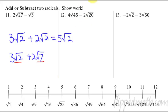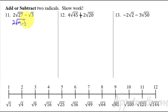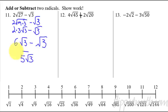Now let's simplify with addition and subtraction. With the first one, you can't subtract right away because the radicals are not the same, so let's simplify first. We get 2 radical 9 times 3 minus radical 3. Radical 9 simplifies to 3, so this is 2 times 3 radical 3 minus radical 3, which is 6 radical 3 minus 1 radical 3. The answer is 5 square root of 3.